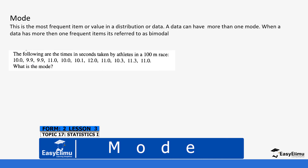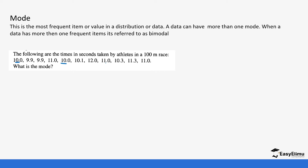Looking at the data: 10.0 appears twice, 9.9 appears twice, 11.0 appears twice, 10.1 appears once, 12.0 appears once, 10.3 appears once, and 11.3 appears once. The value appearing most in this data is 11.0, appearing four times. So we say 11.0 is the mode of this data.